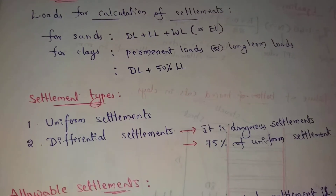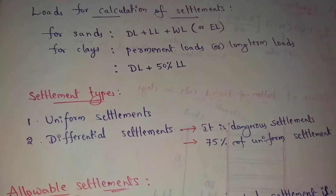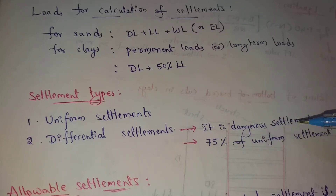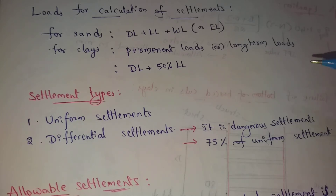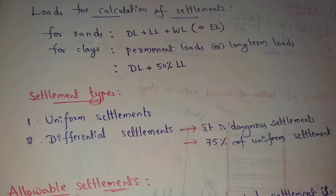Next, settlement types. This settlement has two types: uniform settlement and differential settlement. For differential settlement, it is a dangerous settlement. In this case, differential settlement equals 75% of uniform settlement.